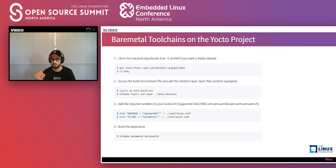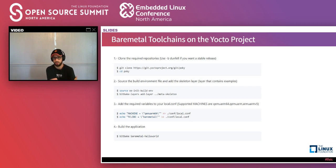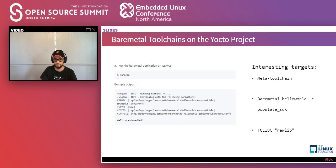If you want to reproduce it, you clone the repo, add the meta-skeleton layer, set your machine — in this case QEMU ARM64 — and set TC libc to bare-metal. Put that in your local.conf and run BitBake for bare-metal-hello-world. After the build is done, you can run runqemu and it'll run the application in QEMU — you'll see 'hello open embedded' on your screen. Interesting targets include meta-toolchain: if you run BitBake meta-toolchain, you'll get a bare metal toolchain for ARM64 architectures.